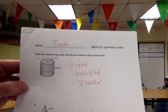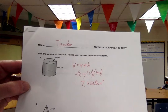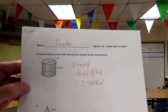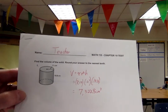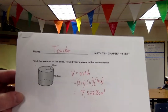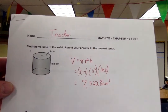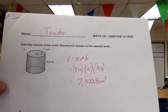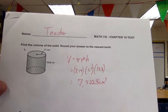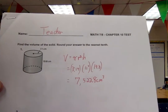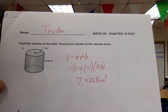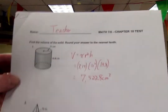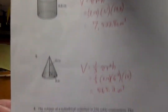First off, everybody, we have to find the volume of this here cylinder. That means pi times radius squared times the height — that's the area of the base times the height. I replaced pi with 3.14, the radius is obviously 11, square it, multiply it by the height. There's your answer: 7,522.8 centimeters cubed.